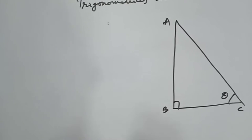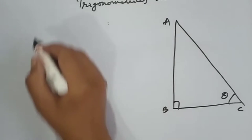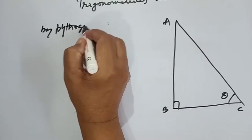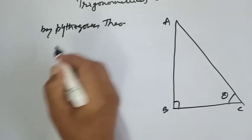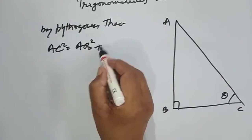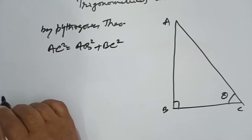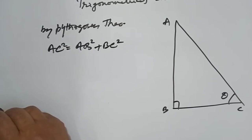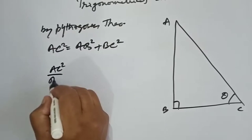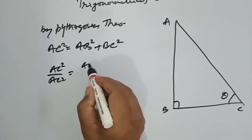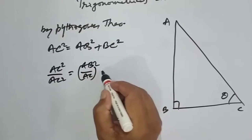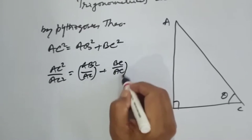We now have to prove the first identity. We apply the Pythagorean theorem. We know AC square is equal to AB square plus BC square. We now divide the whole equation by AC square. We get AC square upon AC square is equal to AB upon AC, the whole square, plus BC upon AC, the whole square.